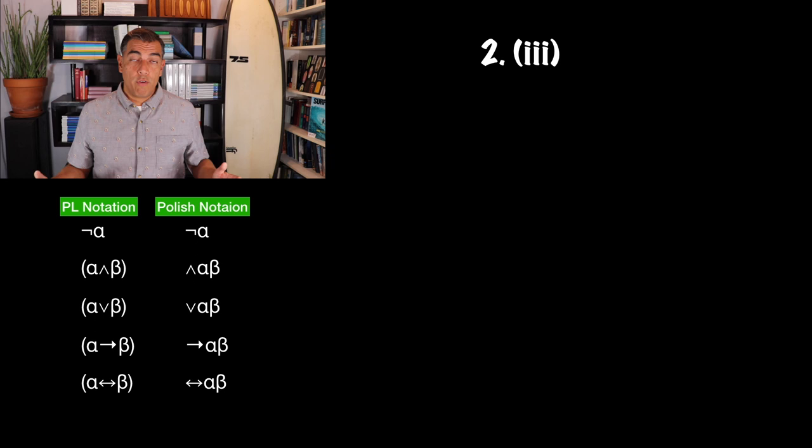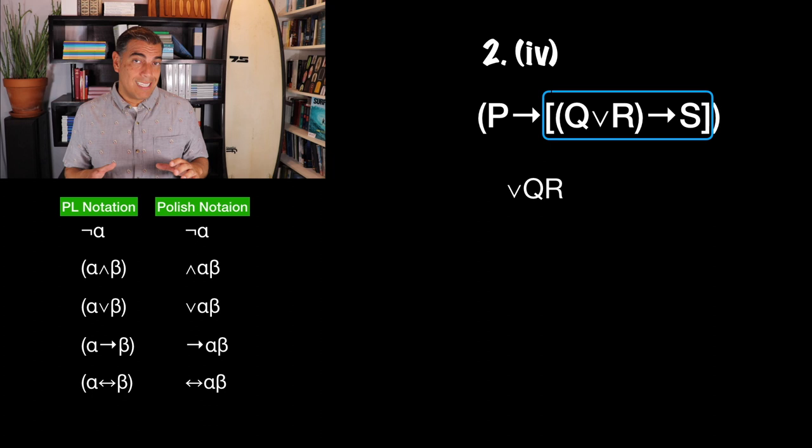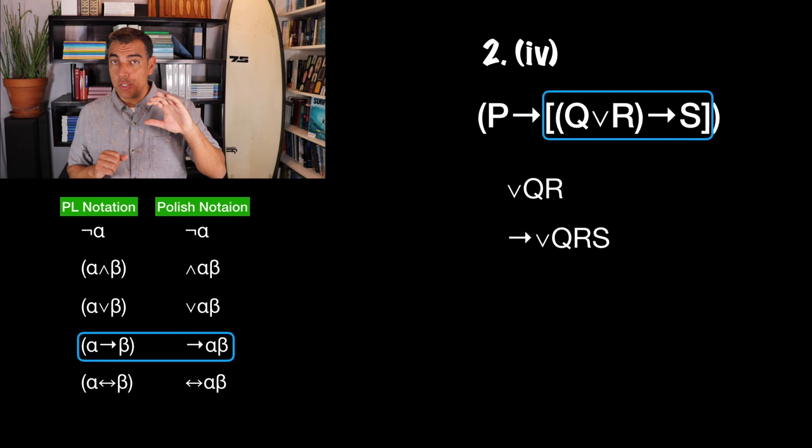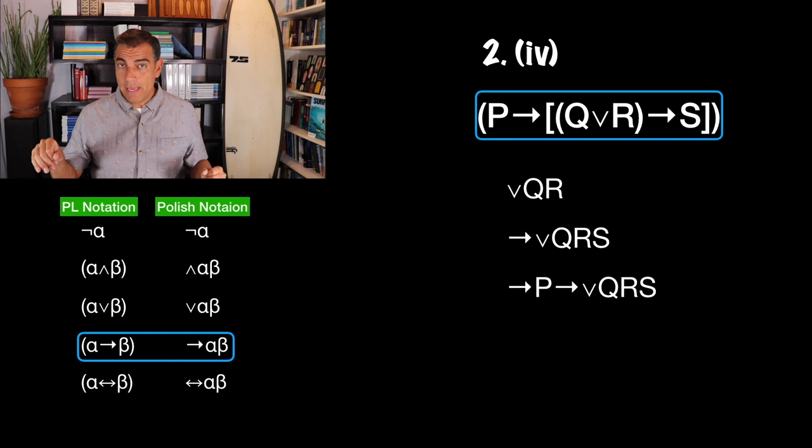For four, I have the inner parentheses Q or R. So I write or Q R. That is then the antecedent of a conditional, so I write arrow or Q R and then my consequent S. And that whole thing is itself a consequent. So I write another arrow, with antecedent P and consequent arrow or Q R S.